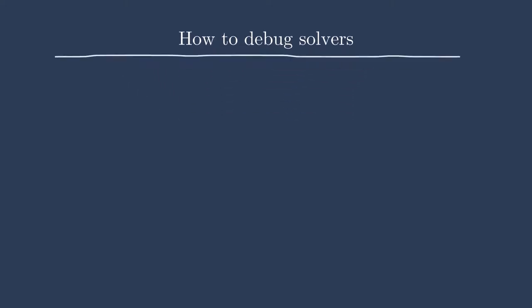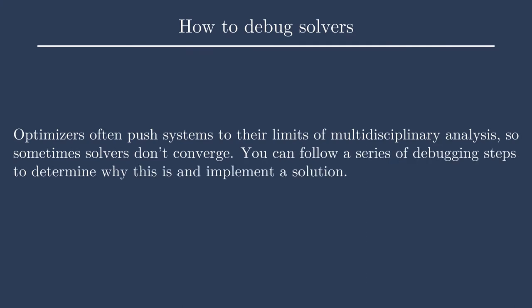The process of optimization notoriously pushes your systems to their limits. Even if your model converges well through a parameter sweep or the initial point, optimizers often push models into weird points in the design space. This might create a very challenging system for the solver to tackle. I'll present a series of debugging steps in this lecture to hopefully resolve any issues you have with solver convergence.